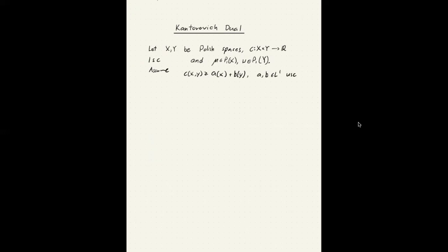Then we have this duality result. And a duality in optimization means that our optimization problem, which is a minimization problem, has the same infimum as the supremum of a dual problem.